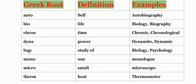For example, auto. Auto is a Greek root which means self and the English word is autobiography and automatic. The next one is bio which means life, for example, biology, biography.